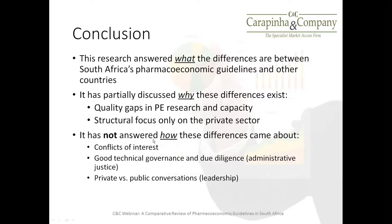What this research doesn't answer at all is how these differences came about. These points may explain it — such as conflicts of interest in individuals that were part of the original drafting team of the pharmacoeconomic guidelines. Good technical governance and due diligence, the Administrative Justice Act in South Africa and how the pharmacoeconomic guidelines could potentially articulate with that, and also private versus public conversations and the topic of leadership.